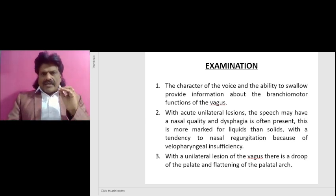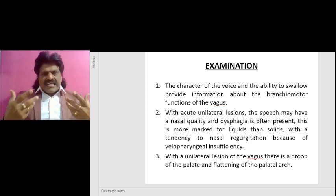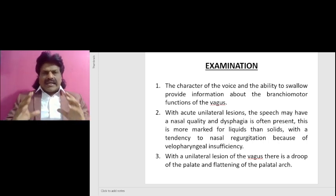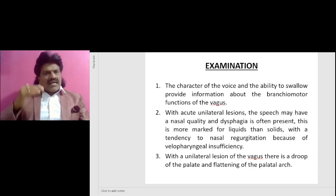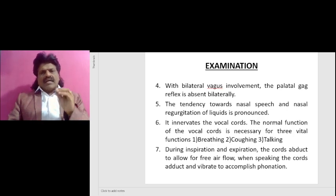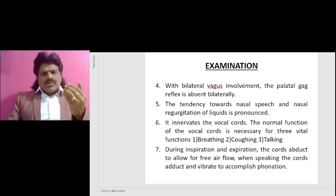Examination of the tenth cranial nerve: the character of the voice and the ability to swallow provide information about the branchiomotor functions of the vagus nerve. With acute unilateral lesions, the speech may have a nasal quality and dysphagia is often present, more marked for liquids than solids, with a tendency to nasal regurgitation due to palatal pharyngeal insufficiency. With a unilateral lesion there is a droop of the palate and flattening of the palatal arch.